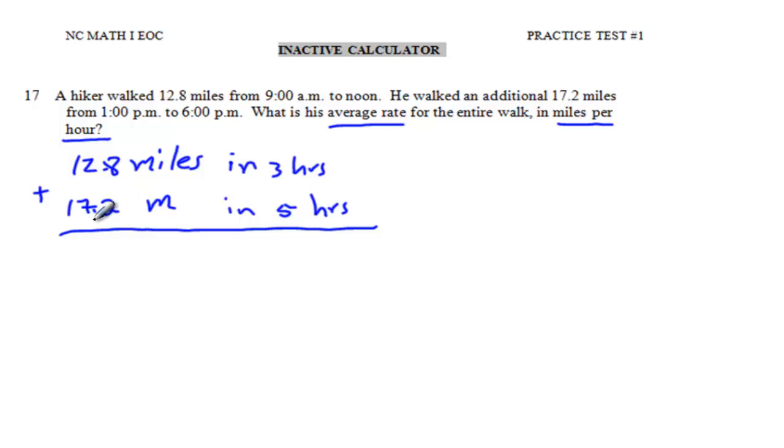12.8 plus 17.2. This question is testing your ability of adding, subtracting and dividing decimal numbers. 8 plus 2 is 10, you carry the 1. 1 plus 2 is 3. 3 plus 7 is 10. Don't forget the decimal. You put the 1 on top. 1 plus 1 is 2, 2 plus 1 is 3. So he walked 30 miles in how many hours?